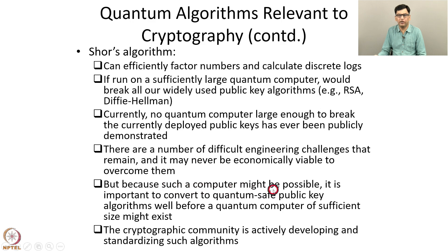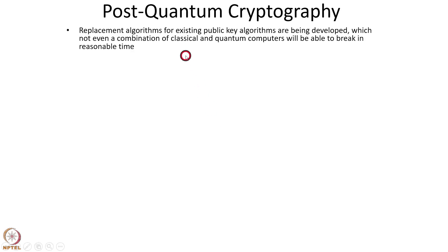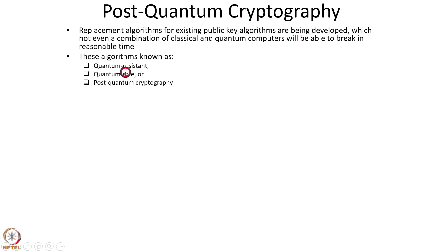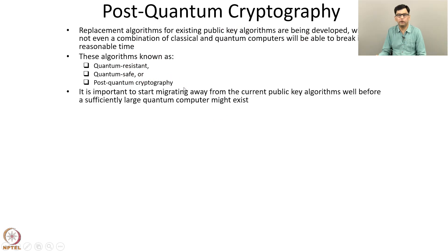The cryptographic community is actively developing and standardizing such algorithms. Replacement algorithms for existing public key algorithms such as RSA and Diffie-Hellman are being developed, and these replacement algorithms are such that not even a combination of classical and quantum computers will be able to break them in reasonable time. These algorithms are known by different names — for example, quantum-resistant algorithms, quantum-safe algorithms, or post-quantum cryptography. It is important to start migrating away from current public key algorithms well before a sufficiently large quantum computer might exist, because people can store encrypted text and later decrypt it using a powerful quantum computer.